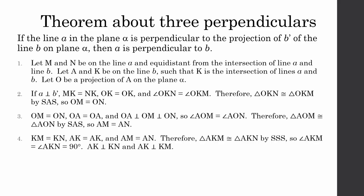Finally, we can show that triangle AKM is congruent to triangle AKN by side-side-side: KM equals KN, AK equals AK, and AM equals AN. Therefore, angle AKM is equal to angle AKN, which is equal to 90 degrees, so AK is perpendicular to KN and AK is perpendicular to KM. AK is on line B and KN is on line A. Therefore, line B is perpendicular to line A, proving the theorem about three perpendiculars.